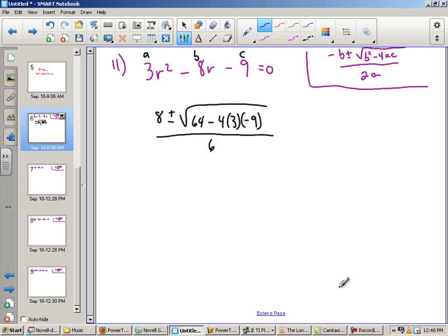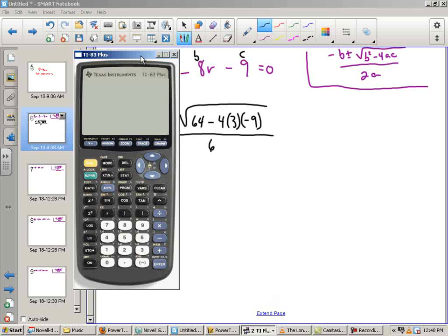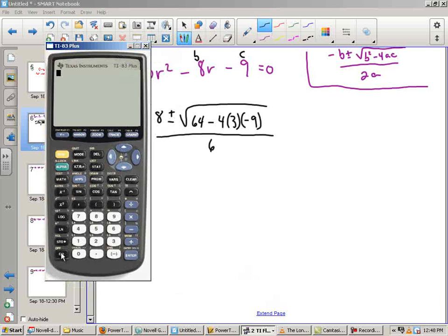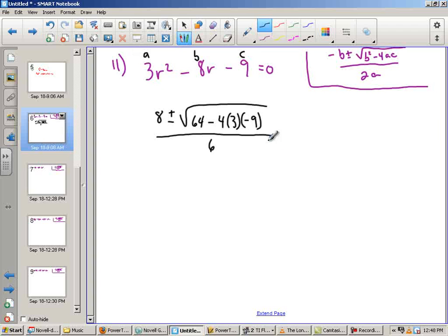So now the thing that I'm going to need to do is take my calculator out and put all this information into my calculator. So I'm going to grab my calculator. And I'm going to put everything inside the discriminant, everything inside of the root together.